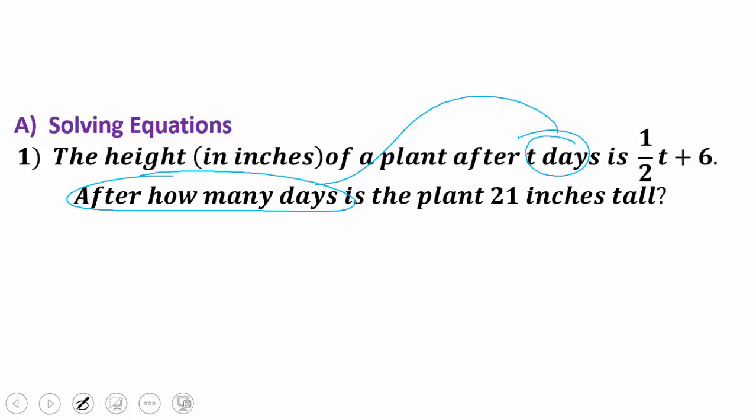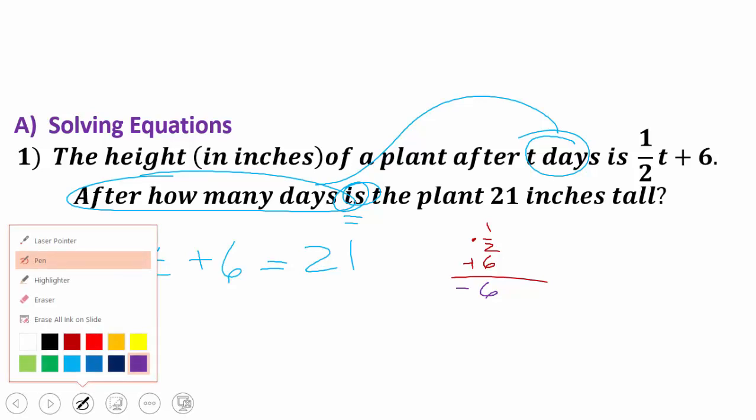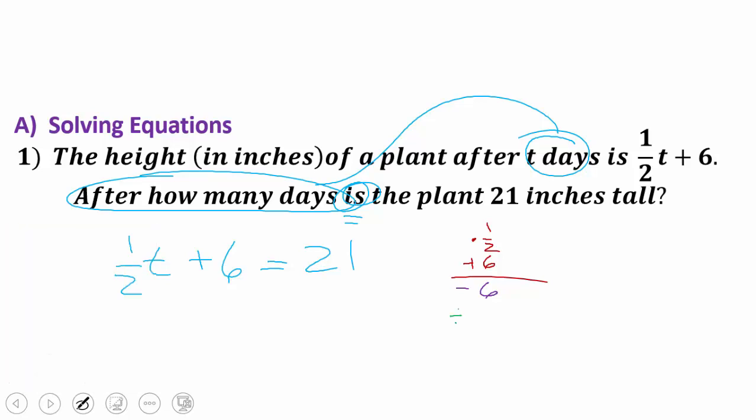It told us that the height after these days is one half t plus six. And it wants to know how many days until it is, this is going to be that equal sign, 21 inches tall. So now we think about, what are we doing here? We're multiplying our t by one half, and then we're adding six. So to do the inverse operations in reverse order, we would first subtract six and then we would divide by one half.